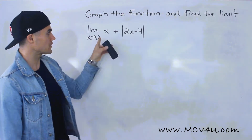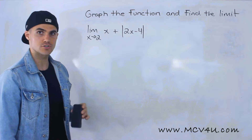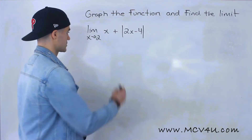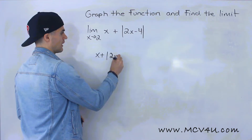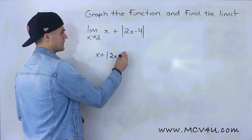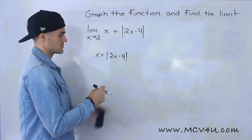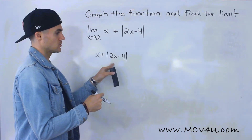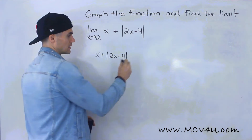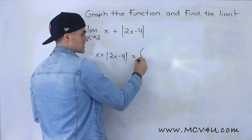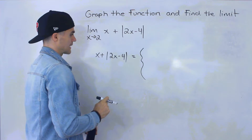The function we're working with is x plus the absolute value of 2x minus 4. Let's write that over here again. And like the previous one-sided limit examples, whenever we're dealing with an absolute value within a function, let's change that to a piecewise function so we can get rid of the absolute value.